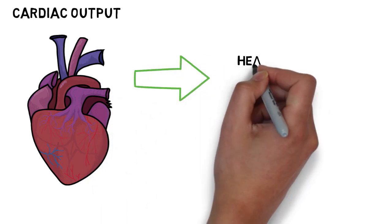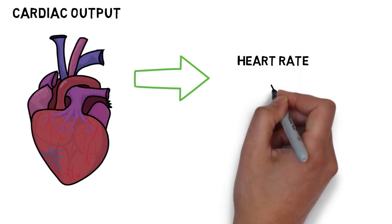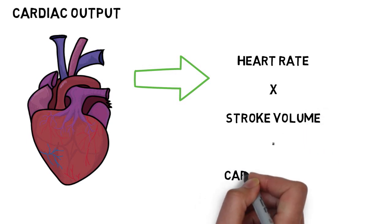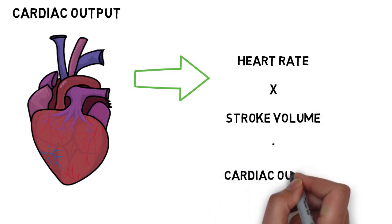Simply multiply the heart rate, the number of heartbeats per minute, by the stroke volume. That's the amount of blood pumped by each ventricle on each heartbeat. Then you are left with the cardiac output.